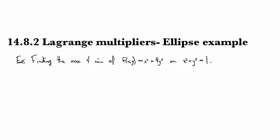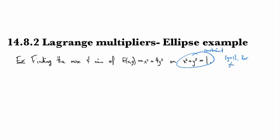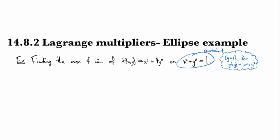First thing is, when you see this constraint equation, what you want to think is that this is the level surface where g is equal to 1 for the constraint function g being equal to x squared plus y squared.